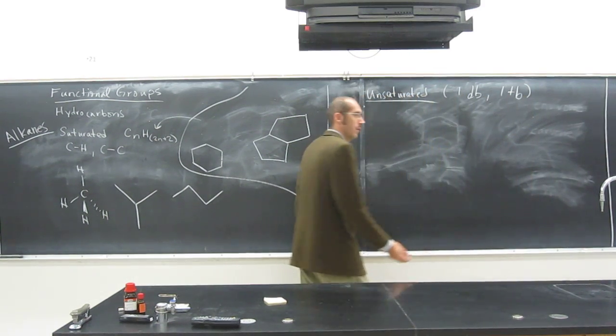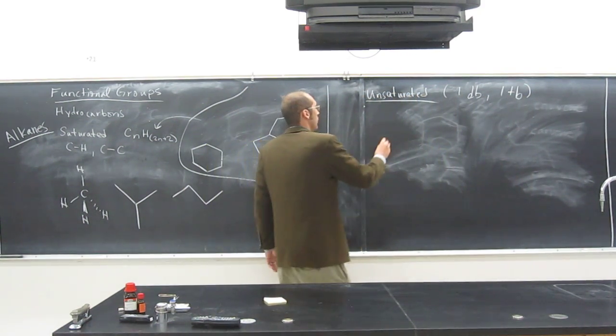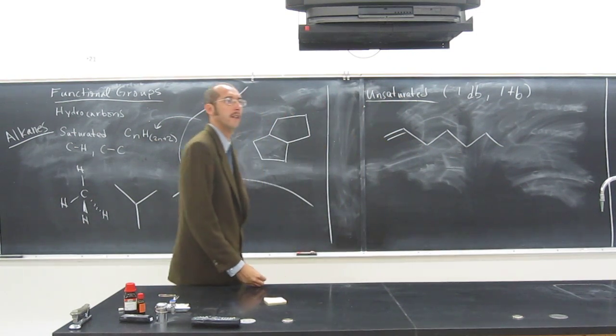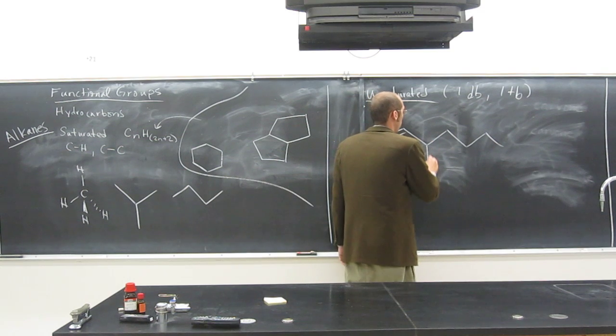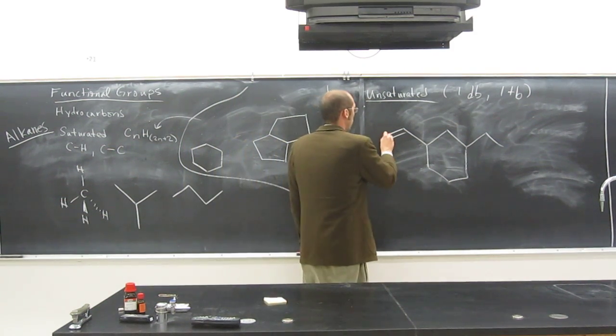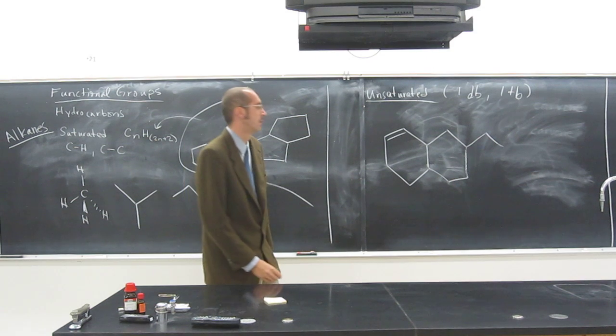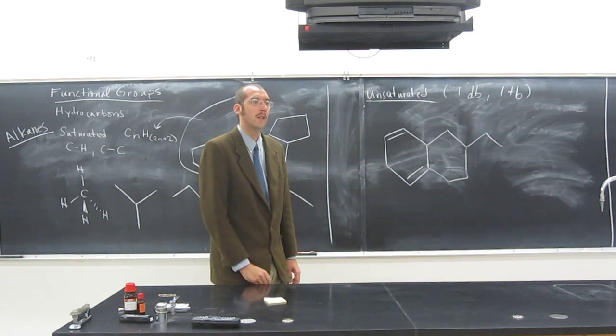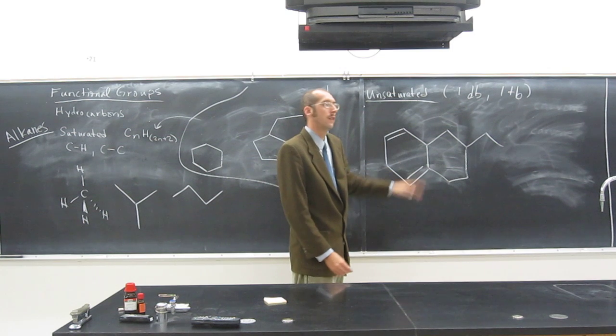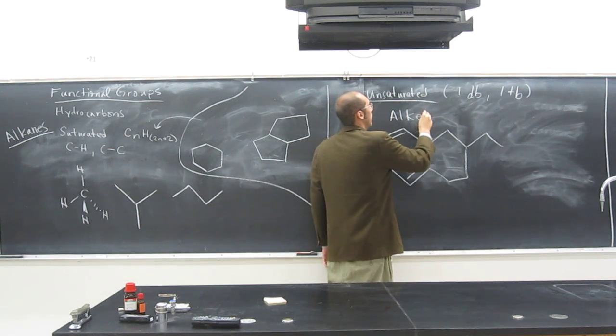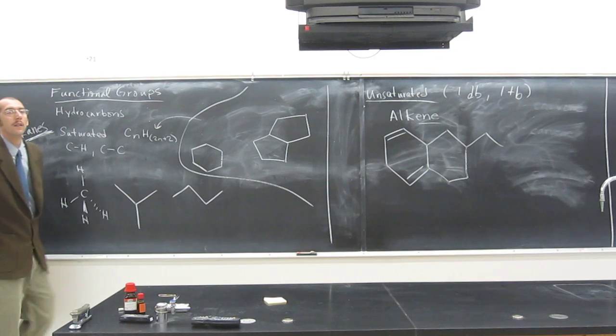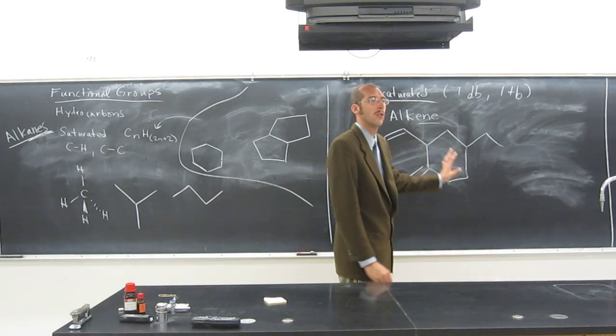Unsaturated hydrocarbons—remember, only carbon and hydrogen—so I have to have at least one double bond in there, right? Like that, or like that, or like that if I wanted to. Those are all unsaturated. They all have at least one double bond. Anything with one double bond in it is called an alkene. Notice the E instead of the A. All of those compounds I just drew, they're all alkenes.